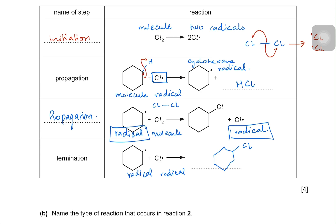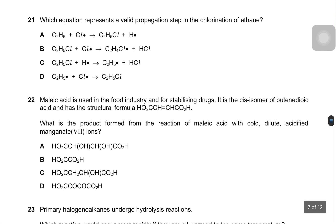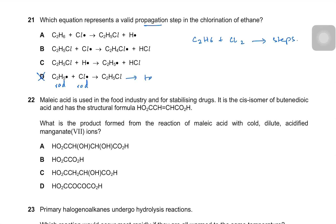Let's look at another question: which equation represents a valid propagation step in the chlorination of ethane? Chlorination of ethane means the two-carbon molecule C₂H₆ reacts with Cl₂ and the steps begin. Propagation means a radical attacks a molecule. Option D shows two radicals combining — that is a termination step, so D is eliminated. It could be A, B, or C.